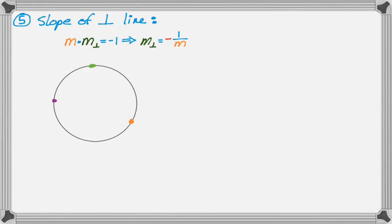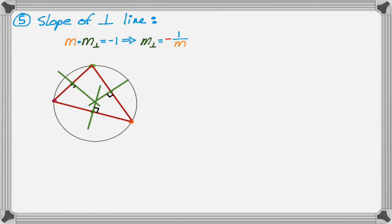We have our circle and there are three points. We consider the chords formed by connecting those three points. It's a property that the perpendicular bisectors of these chords all pass through the center of the circle. The perpendicular bisectors are concurrent, and that point of concurrency is the center of the circle, and it's our objective to find that.